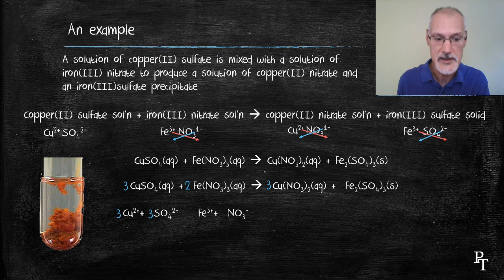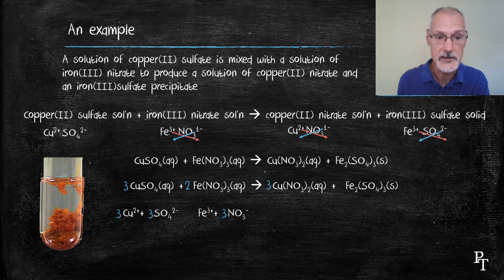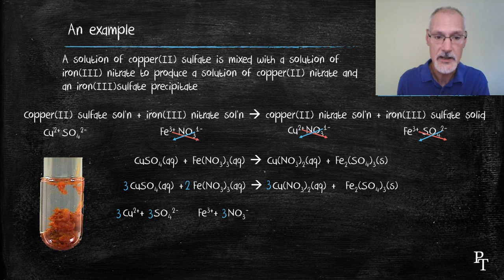But there are 3 nitrates present with each of the irons, as seen in the formula. Now I will bring down the coefficient of 2, doubling each of those. Similarly...